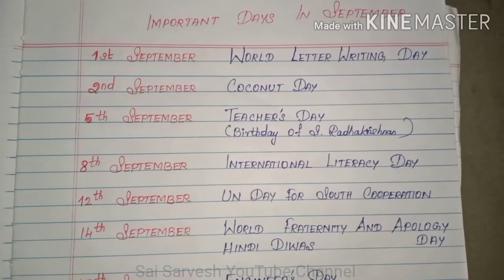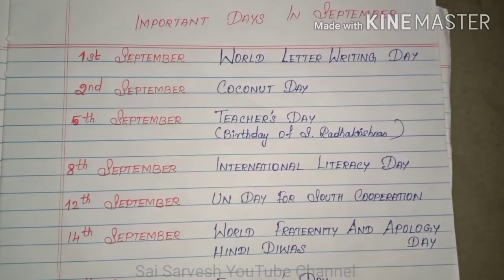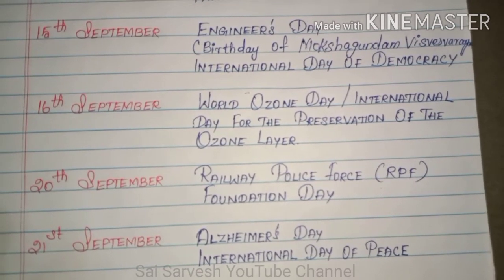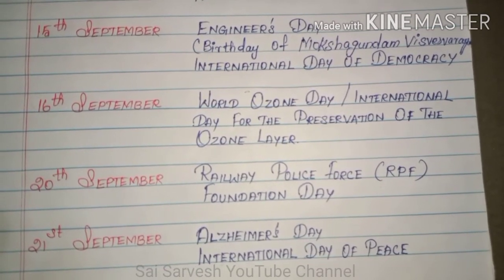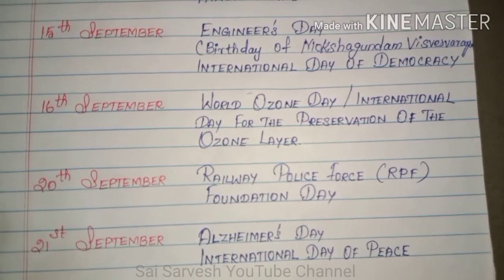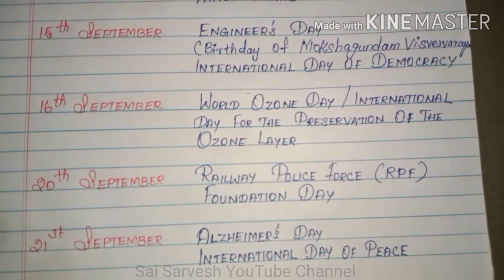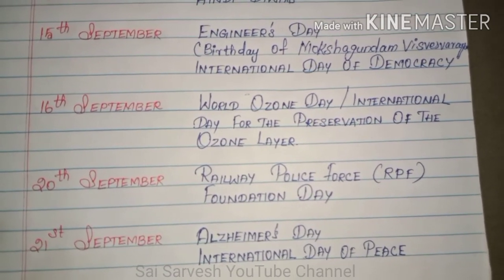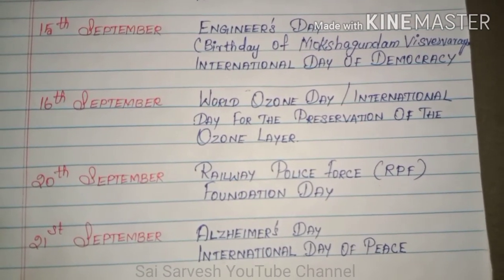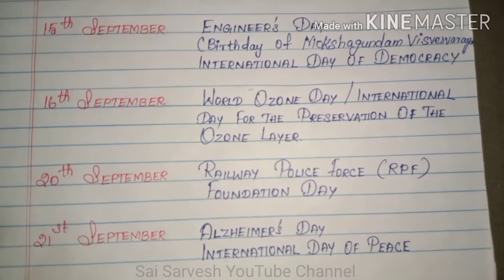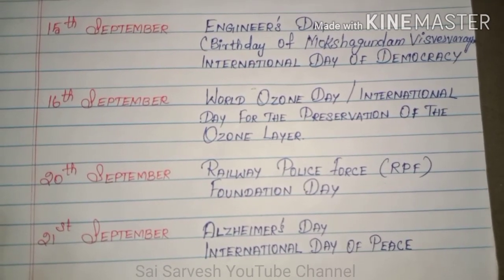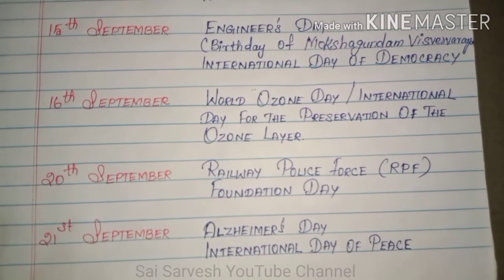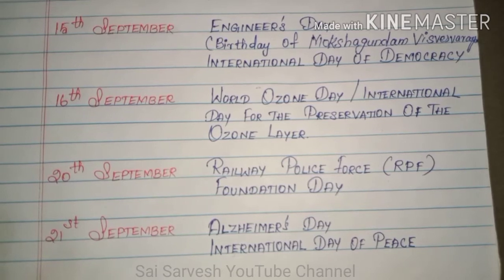14th September: Hindi Divas. 15th September: Engineers Day — birthday of Mokshagundam Visvesvaraya. Also on 15th September: International Day of Democracy. 16th September: World Ozone Day, also known as the International Day for the Preservation of the Ozone Layer.